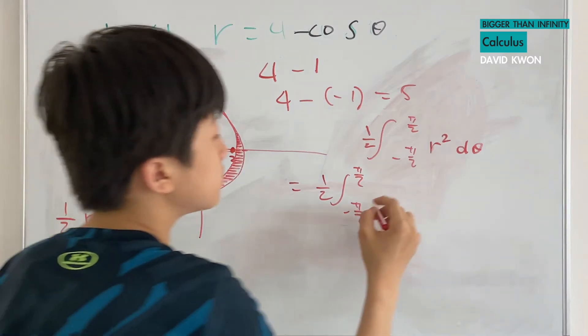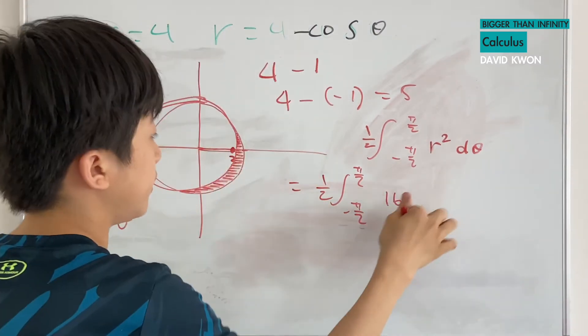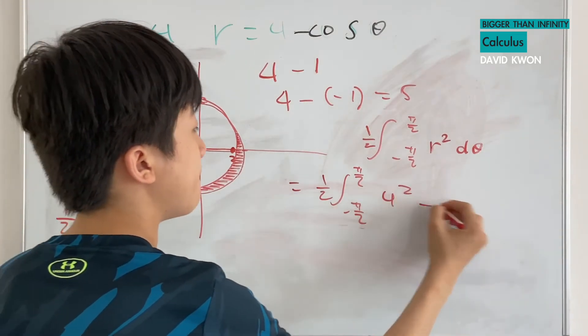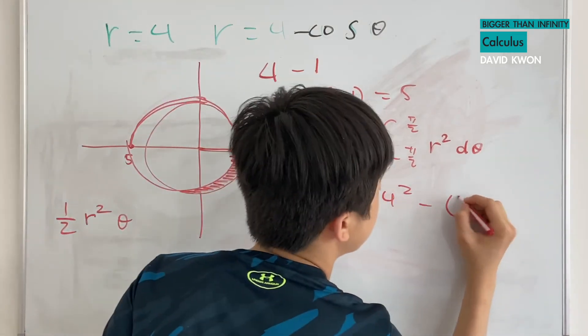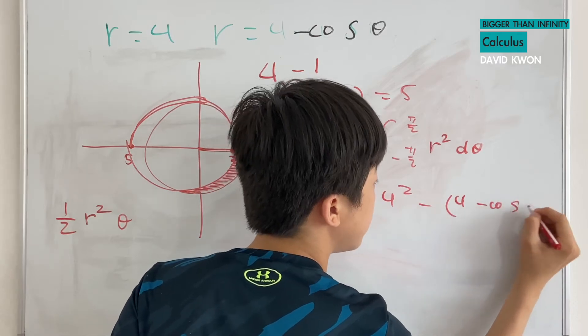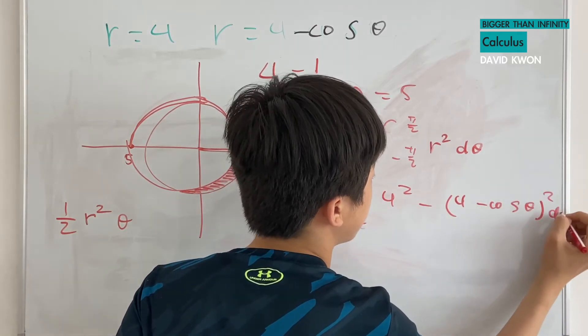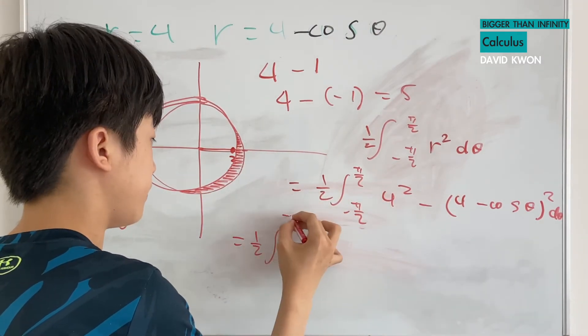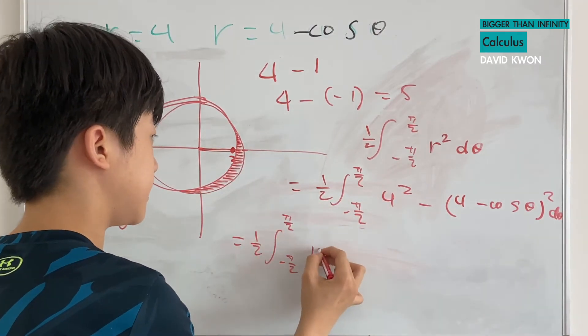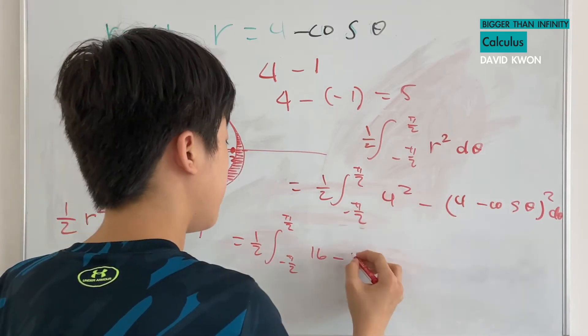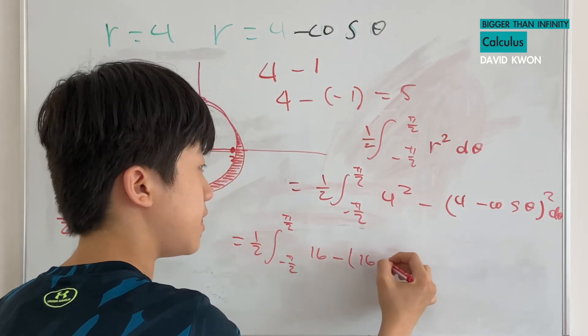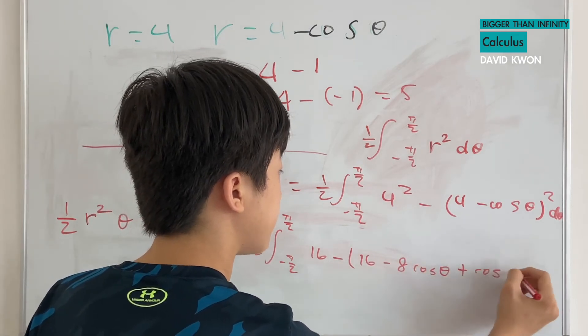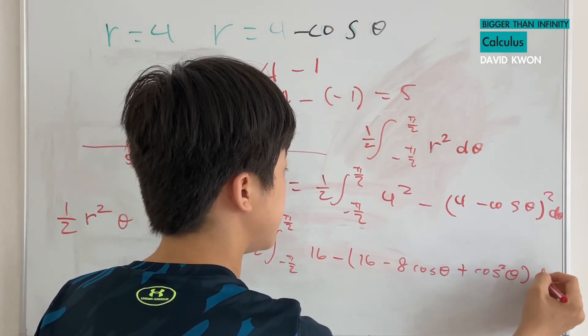And when I do that, I will get this, which is 16. No, I will not skip any steps. 4 squared minus 4 minus cosine theta squared d theta. And 4 squared is equal to 16 minus, and when I expand that, I get 16 minus 8 times cosine theta plus cosine theta squared d theta.